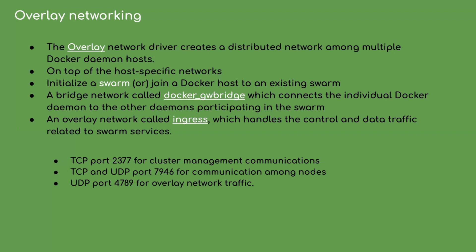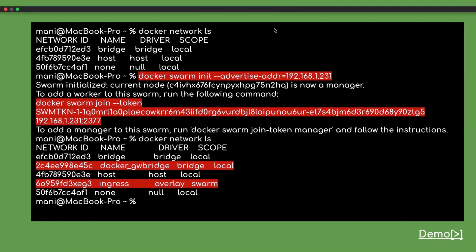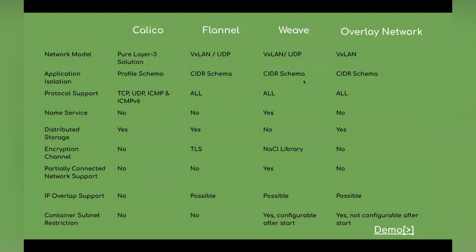If you want to establish a Docker native cluster using Docker Swarm service, make sure the specified ports are available to use and open to connect. Once Docker Swarm is initialized and another Docker host joins the group using the Swarm join command, you may notice two additional networks added to the network stack. I've also compared some multi-host network plugins: Calico, Flannel, Weave, and Docker's overlay network. If you want to be a champion in network configuration, you must be familiar with the internals.